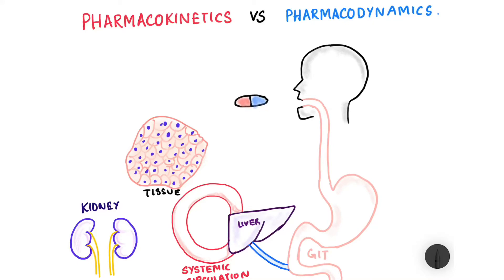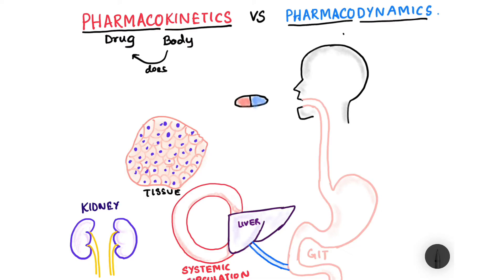Hello everyone, the Nerd Mary here. In this video we will learn the difference between pharmacokinetics and pharmacodynamics. The word 'pharmaco' means drug, and 'kinetic' means whatever the body does to the drug. Pharmacodynamics, on the other hand, means whatever the drug does to the body — the action of the drug on the body. The action of the body on the drug is discussed in pharmacokinetics. These are the two broad headings under which we learn the pharmacology of different drugs.